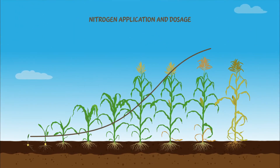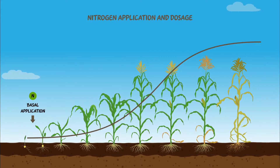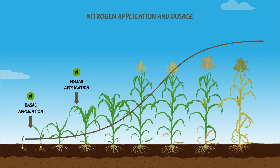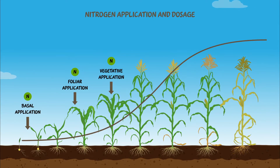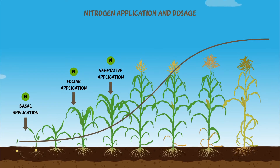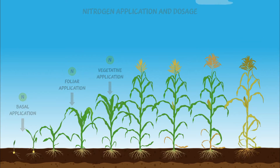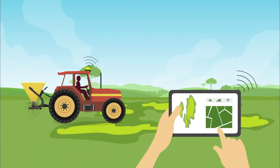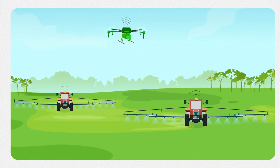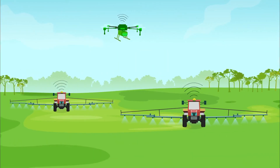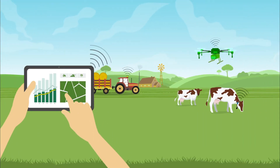Fertilizer application at the right time and place will help further reduce losses. For this, fertilizers are split into several applications over the growing period to best synchronize nutrient supply with plant needs. Precision farming tools help to predict crop nitrogen requirements, optimize application, and avoid unnecessary environmental impacts.